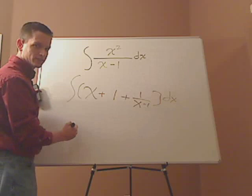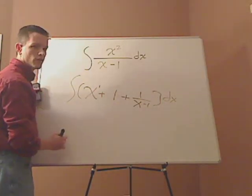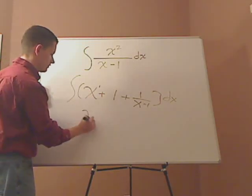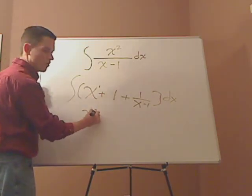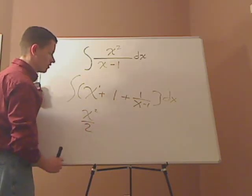The integral of x - you use the power rule. So this is x to the first. You increase this by 1 and put it over whatever that number is. So it would be x squared over 2.